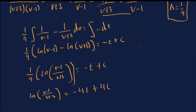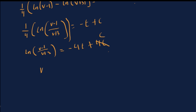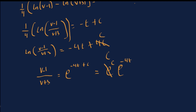Multiplying both sides by 4, we get the natural log of |(v minus 1) over (v plus 3)| equals negative 4t plus 4c. Because c is an unknown constant, 4c is also an unknown constant, so we just call that whole term c. When we exponentiate both sides, the left side becomes (v minus 1) over (v plus 3), and the right side becomes e raised to (negative 4t plus c), which equals e to the c times e to the negative 4t. Since e to the c is just an unknown constant, we call it c, giving us c times e to the negative 4t.